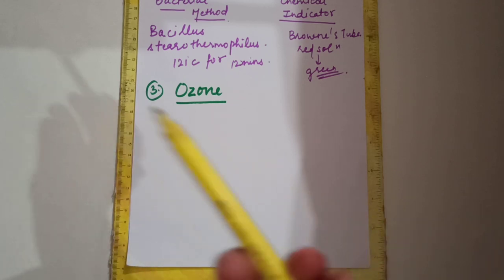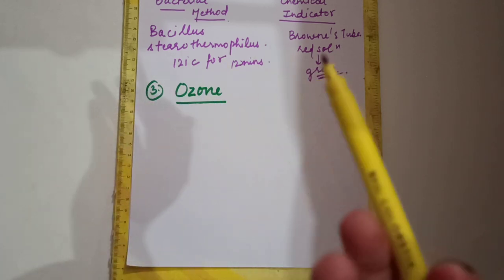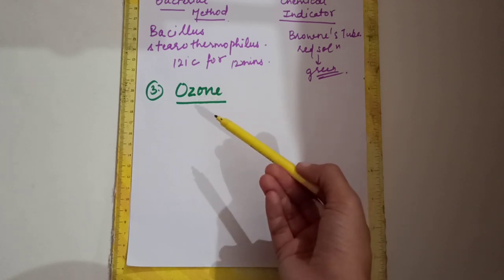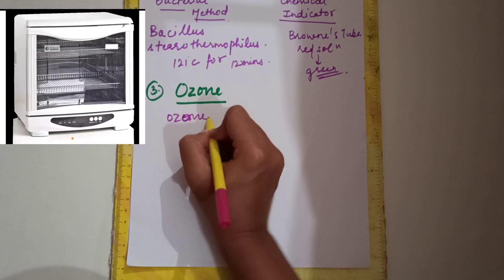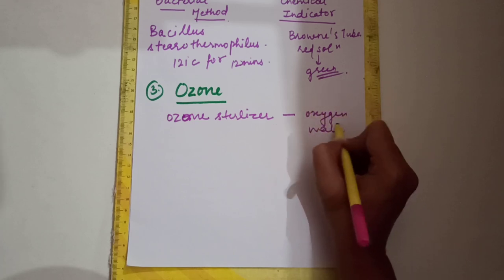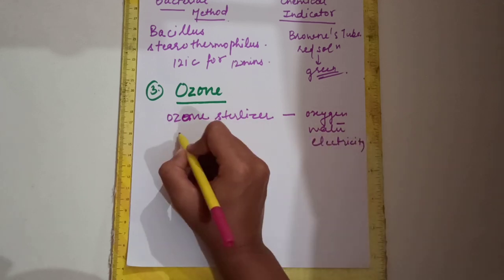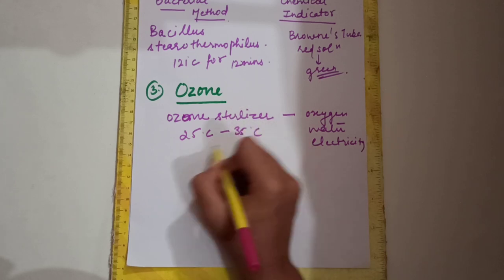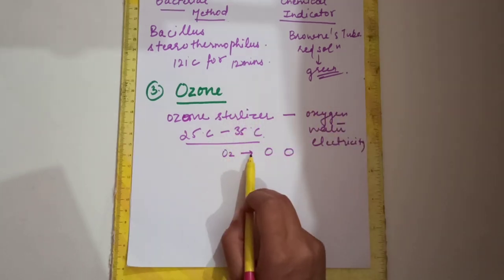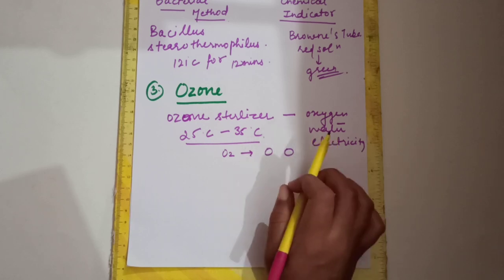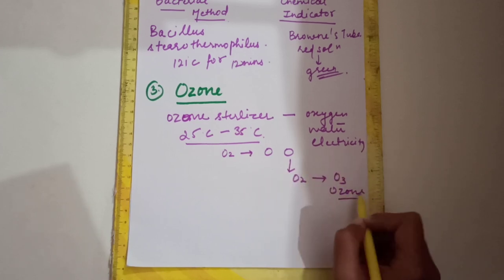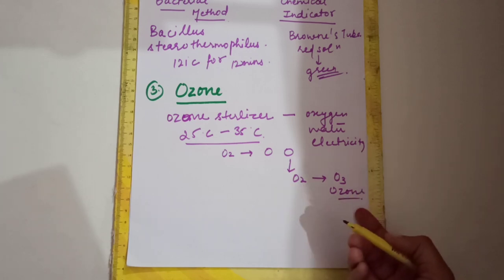Next physical method is ozone. Ozone uses oxygen, water, and electricity at a low temperature of 25 to 35 degrees Celsius. When electricity is provided, the oxygen molecule separates into atomic oxygen in the presence of an electric field; that atomic oxygen combines with O2 to form O3 (ozone), which sterilizes the equipment placed inside.